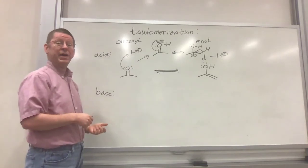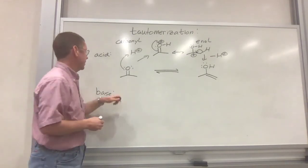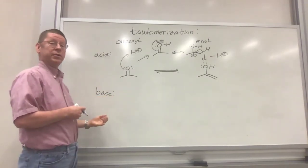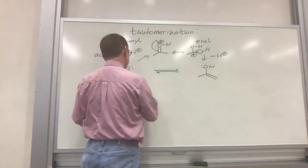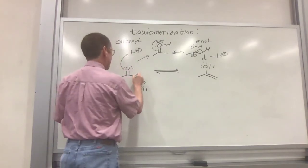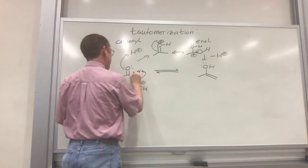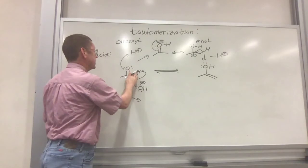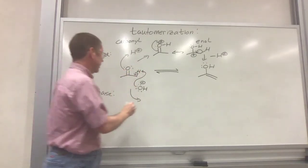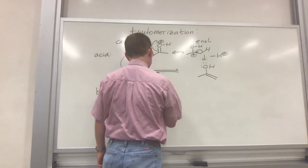The base pathway, we just flip that around. We reverse things. So with base, we don't have a proton to put on there, but we can remove a proton. And so I will use hydroxide as a generic base. We'll remove one of those alpha protons next door to the carbonyl. We will generate an anion.